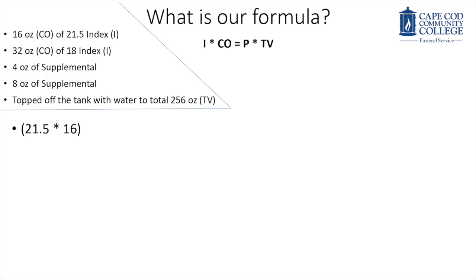Let's revisit our problem and now apply the equation. The left side was the items you needed extracted from that word problem. Now let's use those numbers and apply it to our formula. So I stands for index. The index of our first chemical is 21.5, and we're going to multiply that by the concentrated ounces, which was one full bottle, 16 ounces. So we multiply 21.5 by 16.